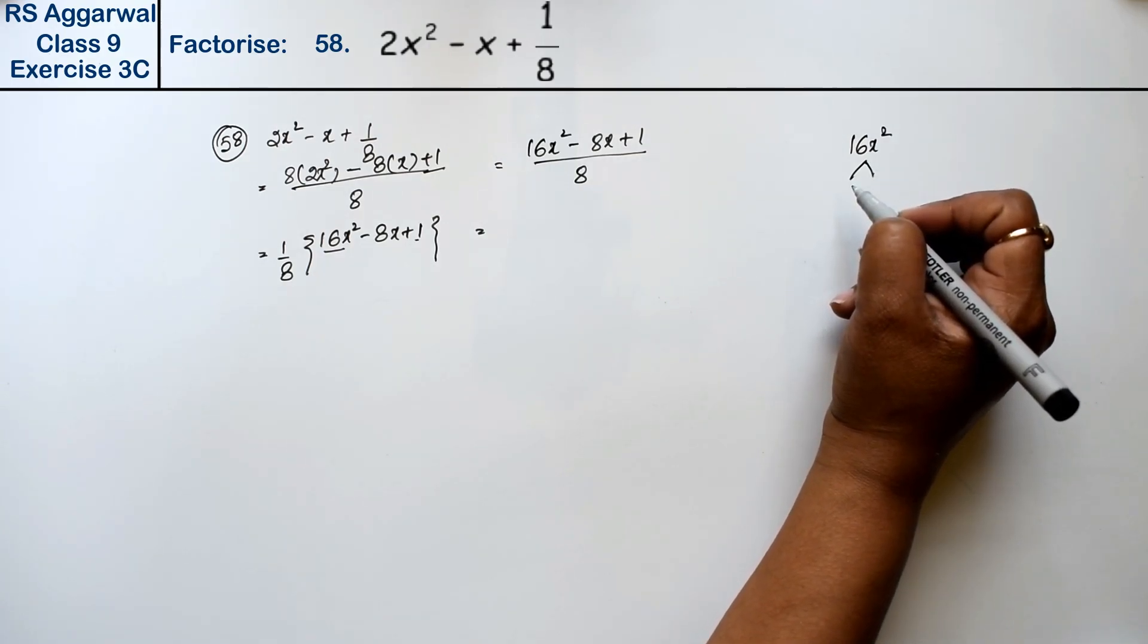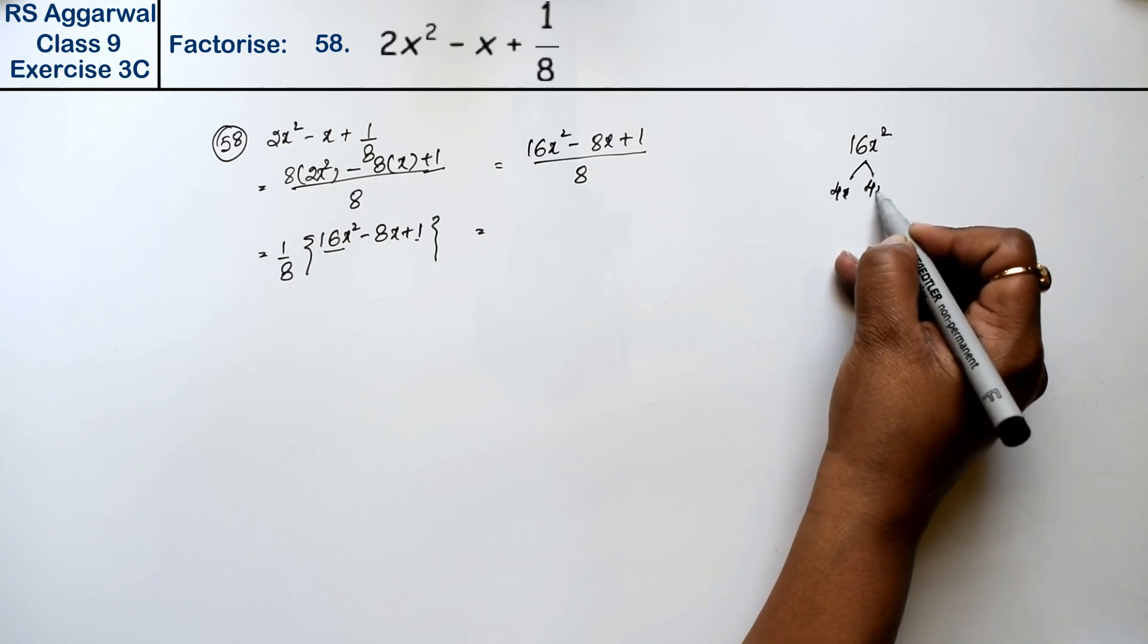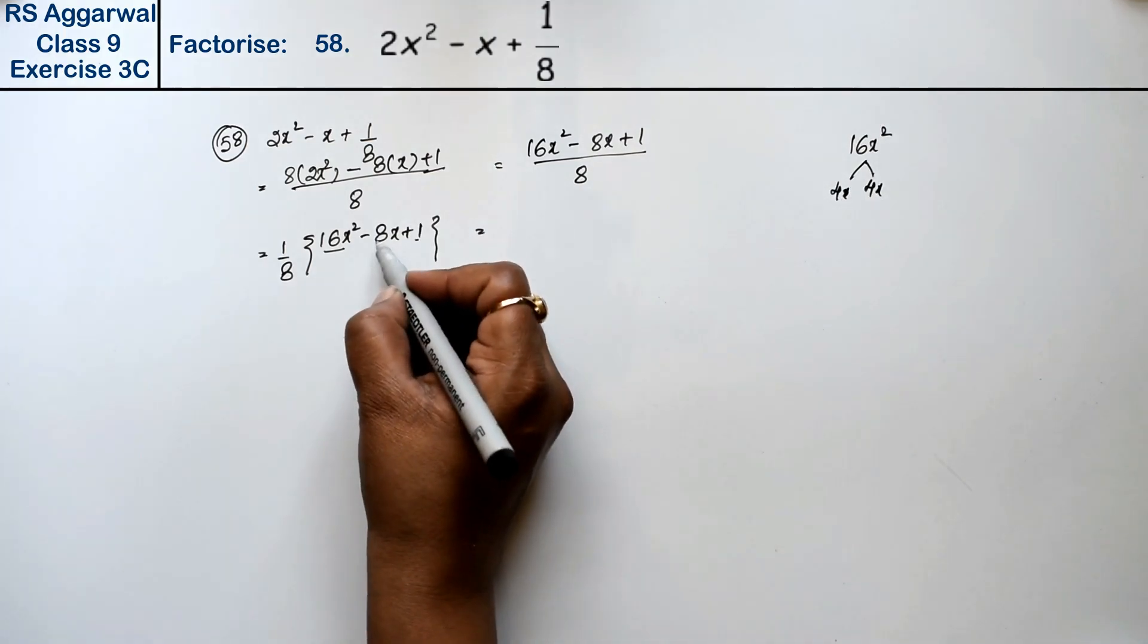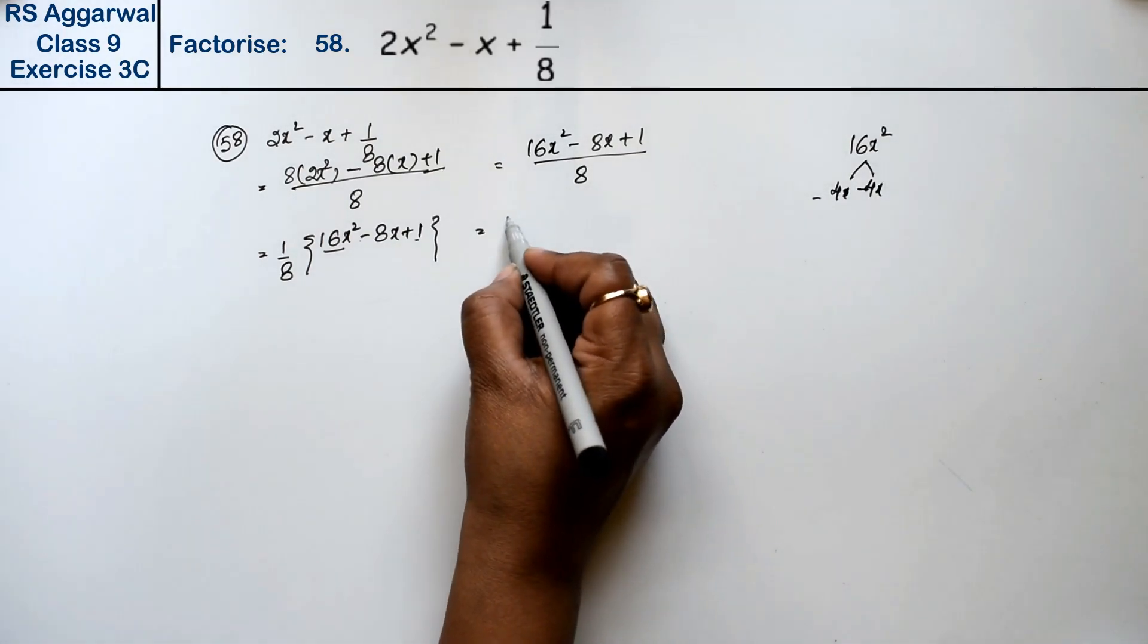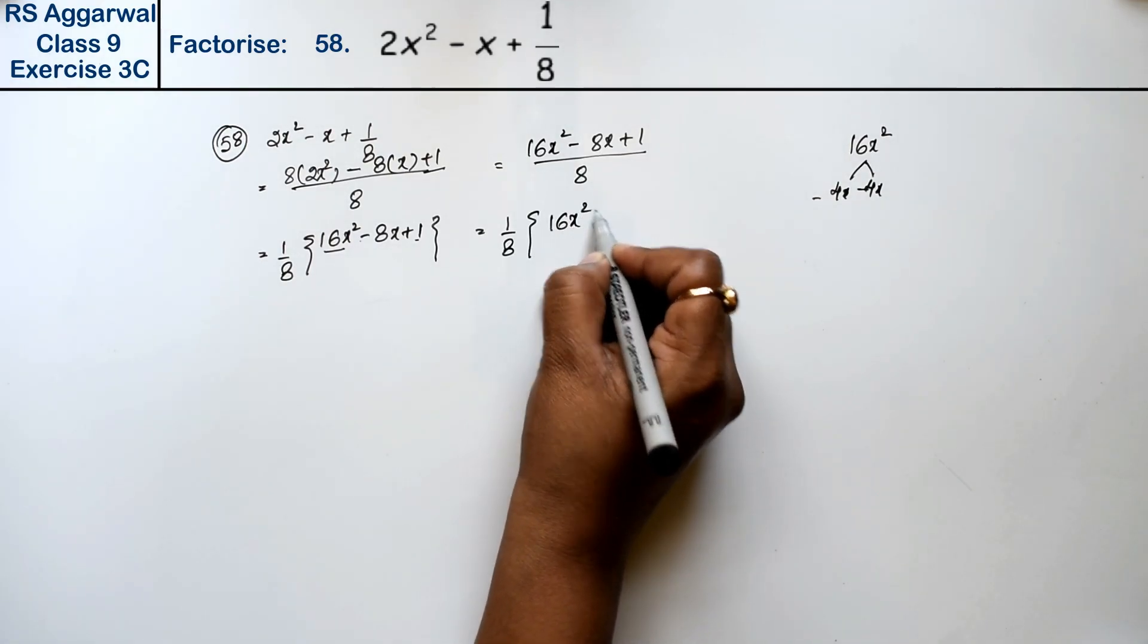For factors with sum -8, we know 4 × 4 = 16. The sum is 8, so both signs will be negative. So we have 1/8(16x² - 4x - 4x + 1).